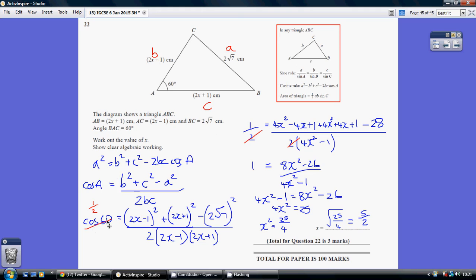And using my calculator, cos 60 is a half. So a half equals all of this. So we just need to number crunch a bit. Work out what 2x minus 1 all squared is. Work out what 2x plus 1 all squared is. And they are, respectively, 4x squared minus 4x plus 1 and 4x squared plus 4x plus 1. And we're taking away 2 root 7 all squared.